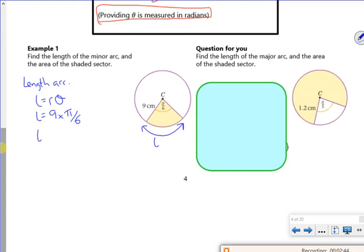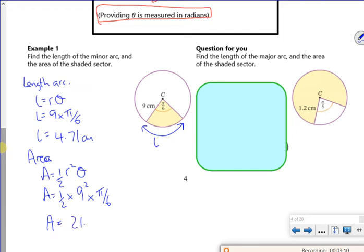And that will give me roughly 4.7 cm. And for the area, A equals ½ times 9² times π over 6, which is 21.2 cm squared.